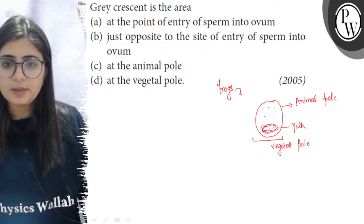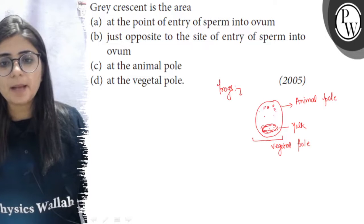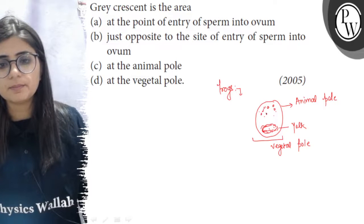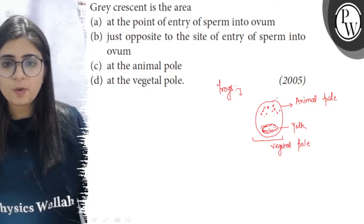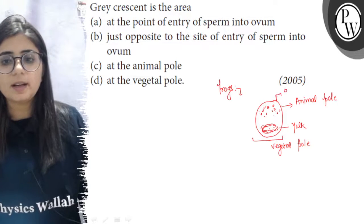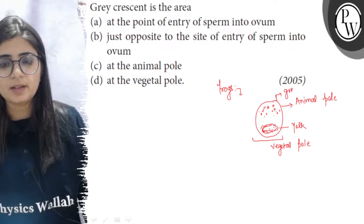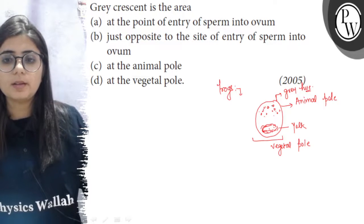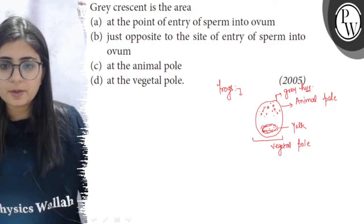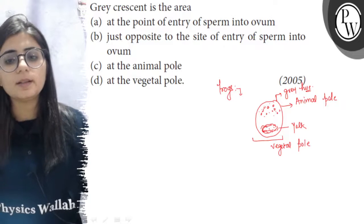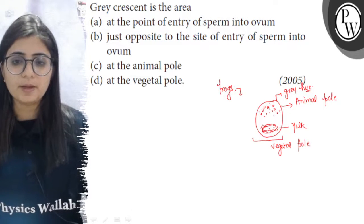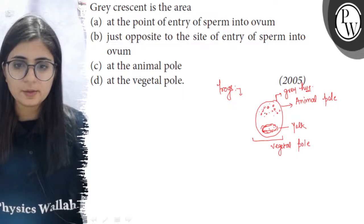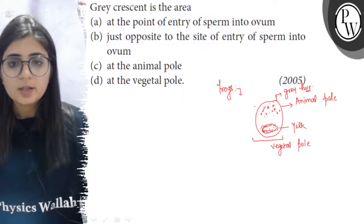At the animal pole, the cytoplasm contains melanin pigment which provides it a gray coloration — a gray hue to the animal pole. The melanin granules are present here at the animal pole.